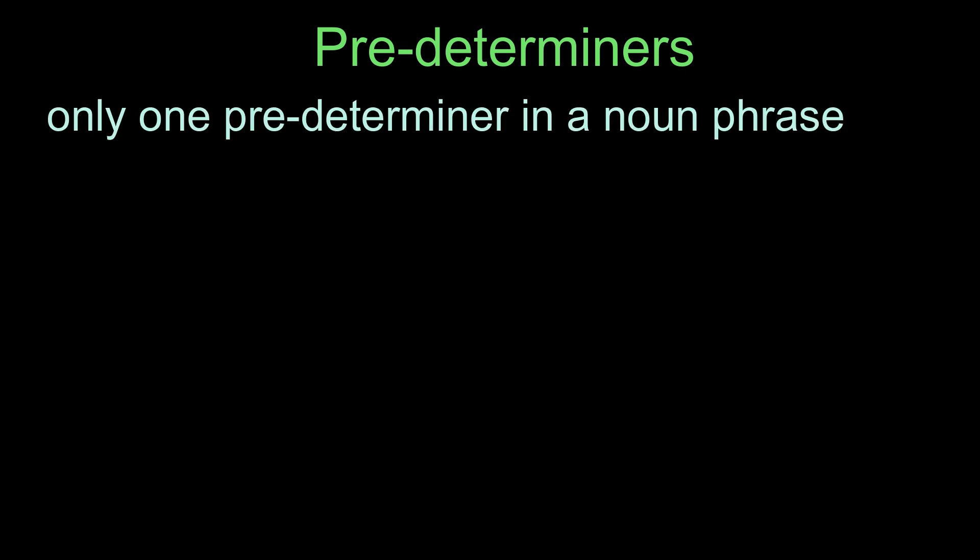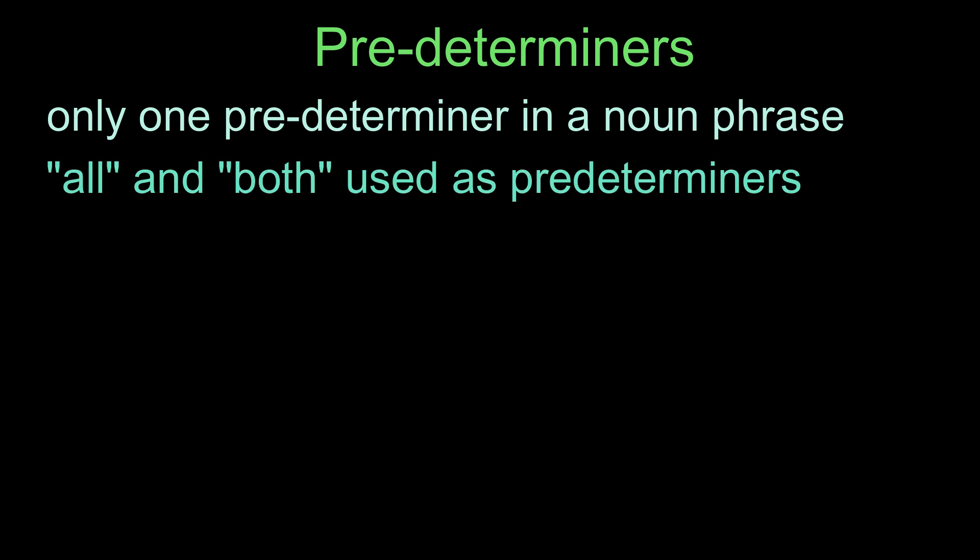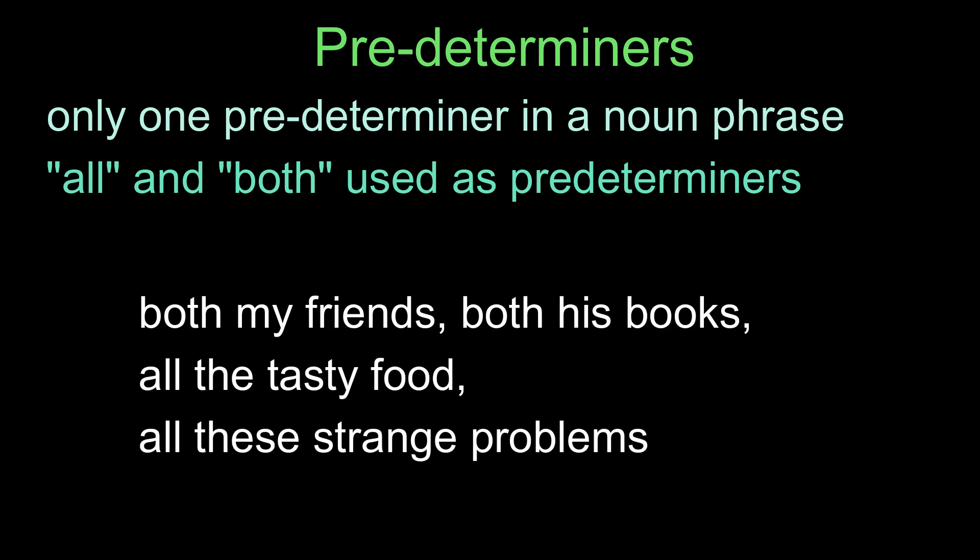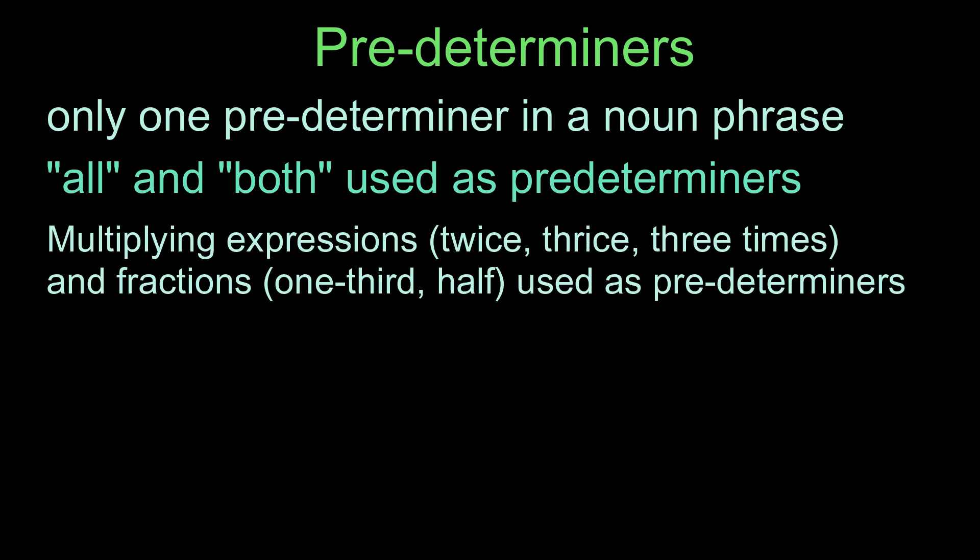Predeterminers: Determiners that occur before the main determiner are called predeterminers. There can be only one predeterminer in a noun phrase. Among the indefinite quantifiers, only 'all' and 'both' can be used as predeterminers. Multiplying expressions — twice, thrice, three times — and fractions — one-third, half — can also serve as predeterminers.